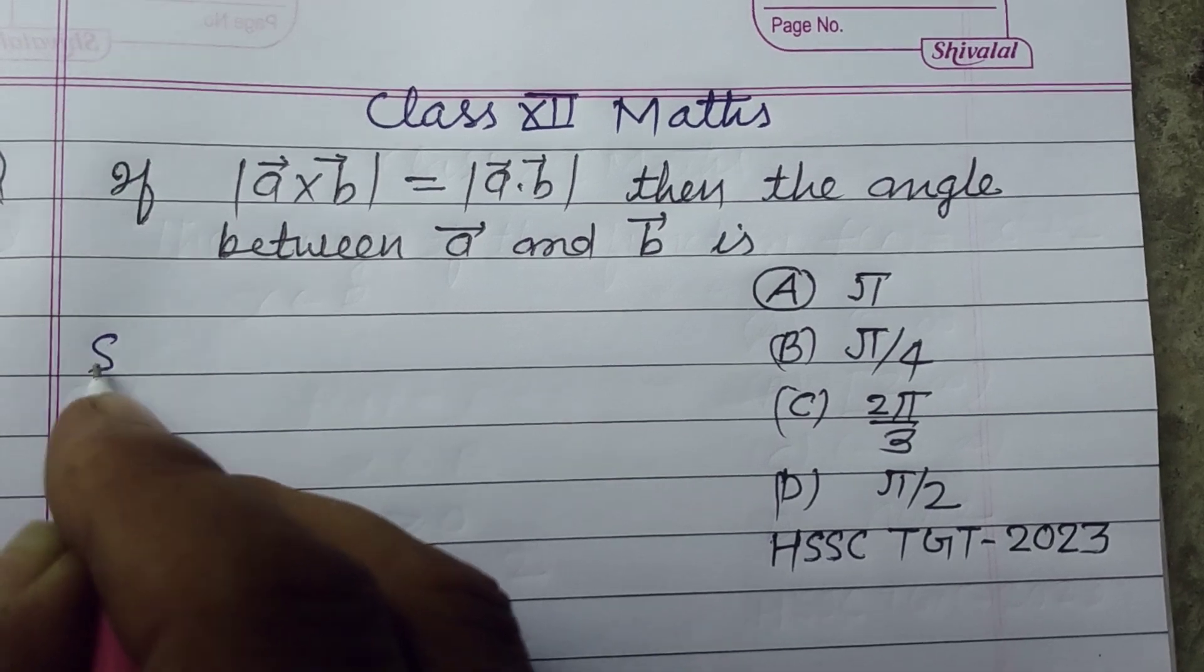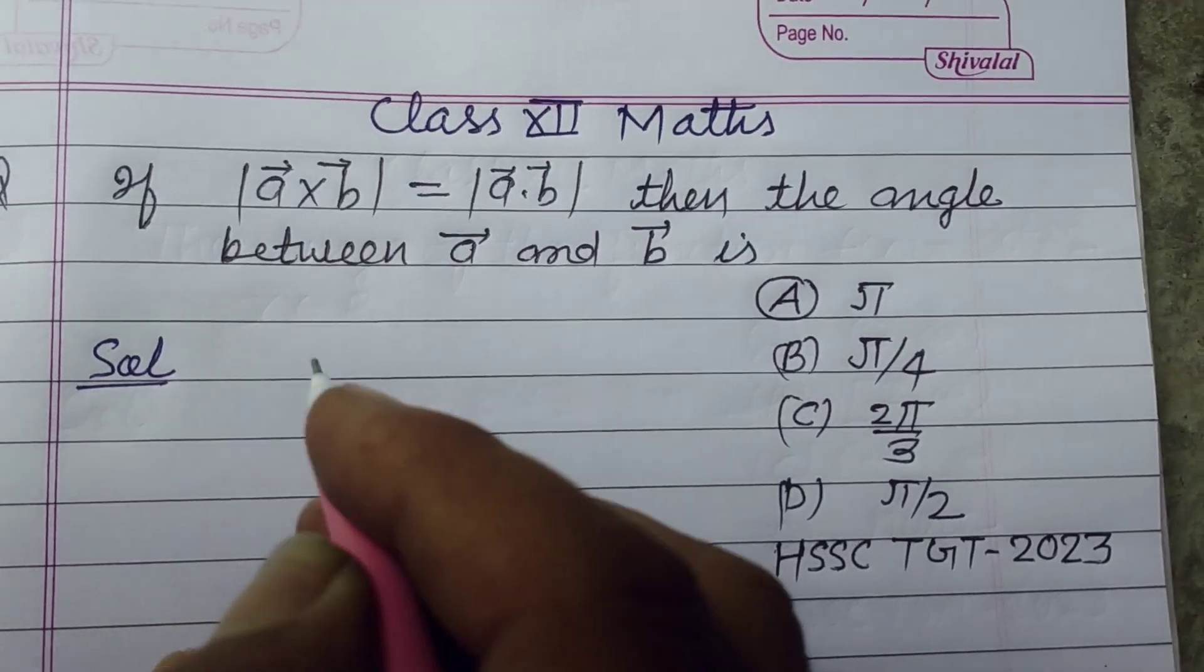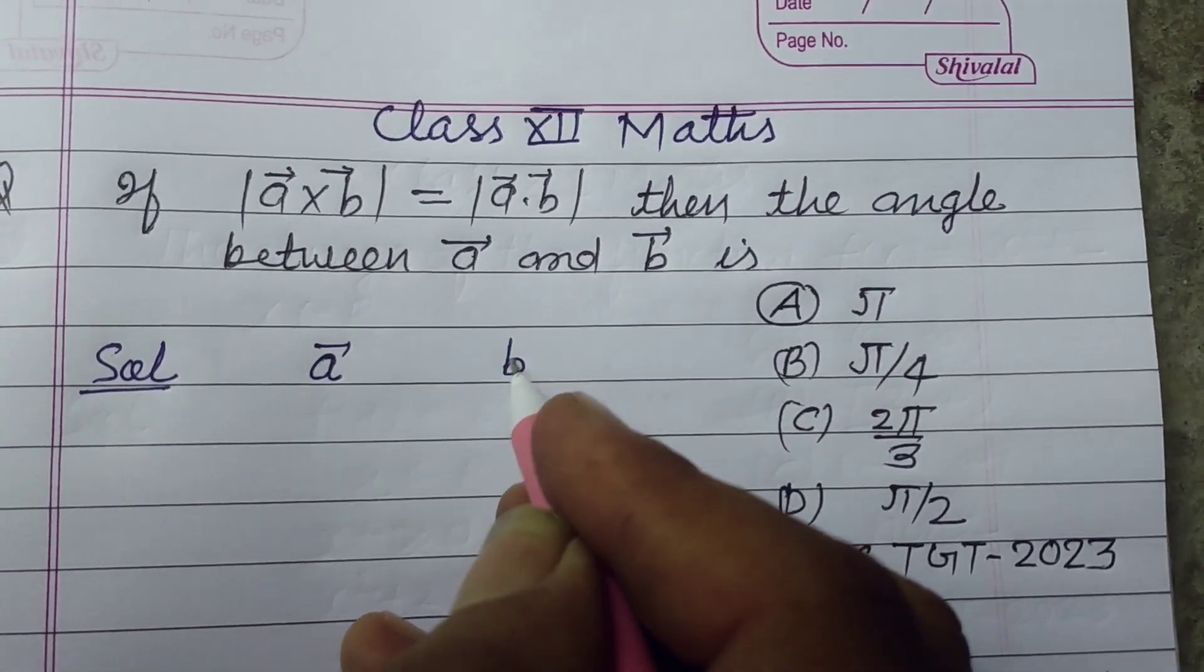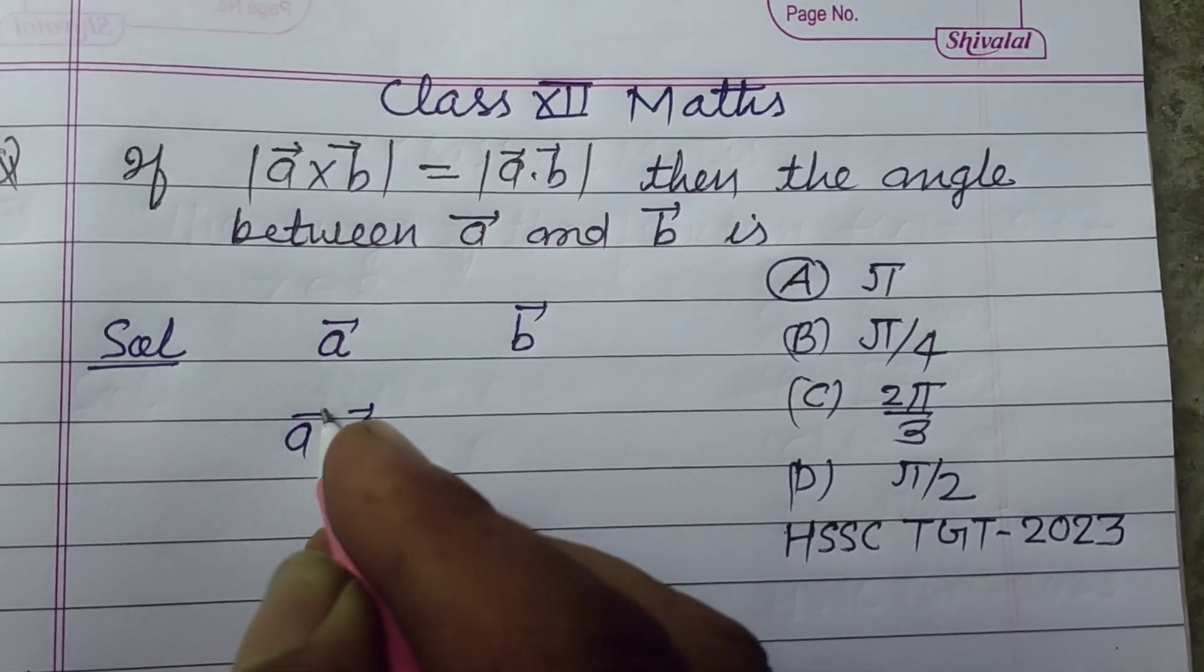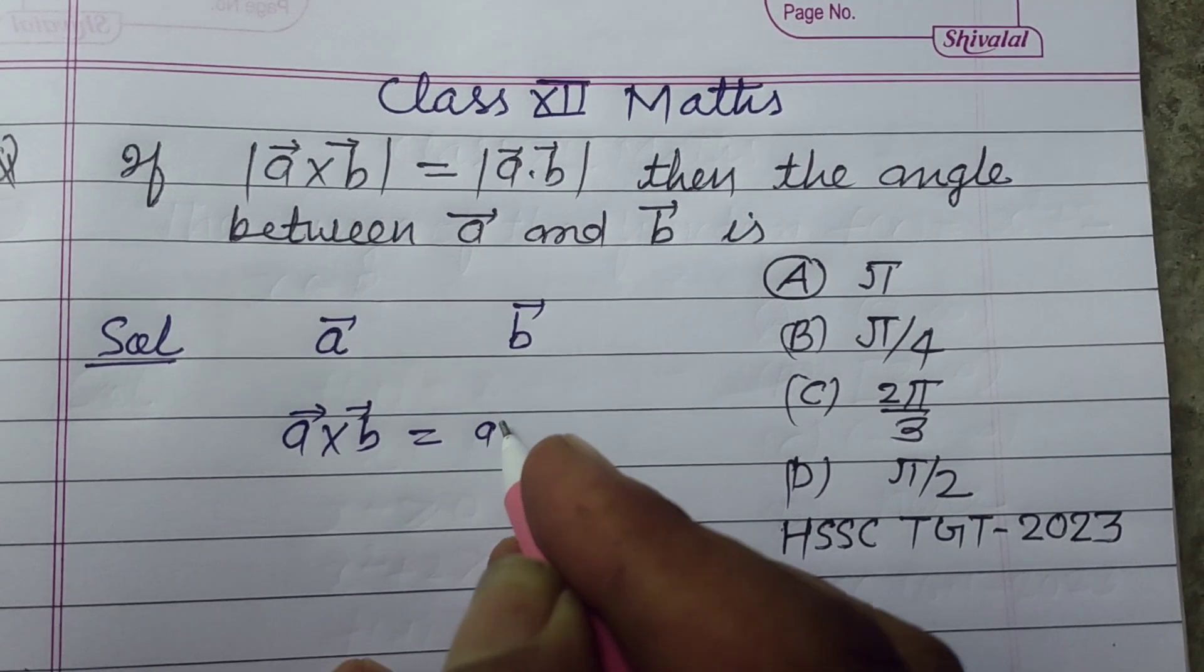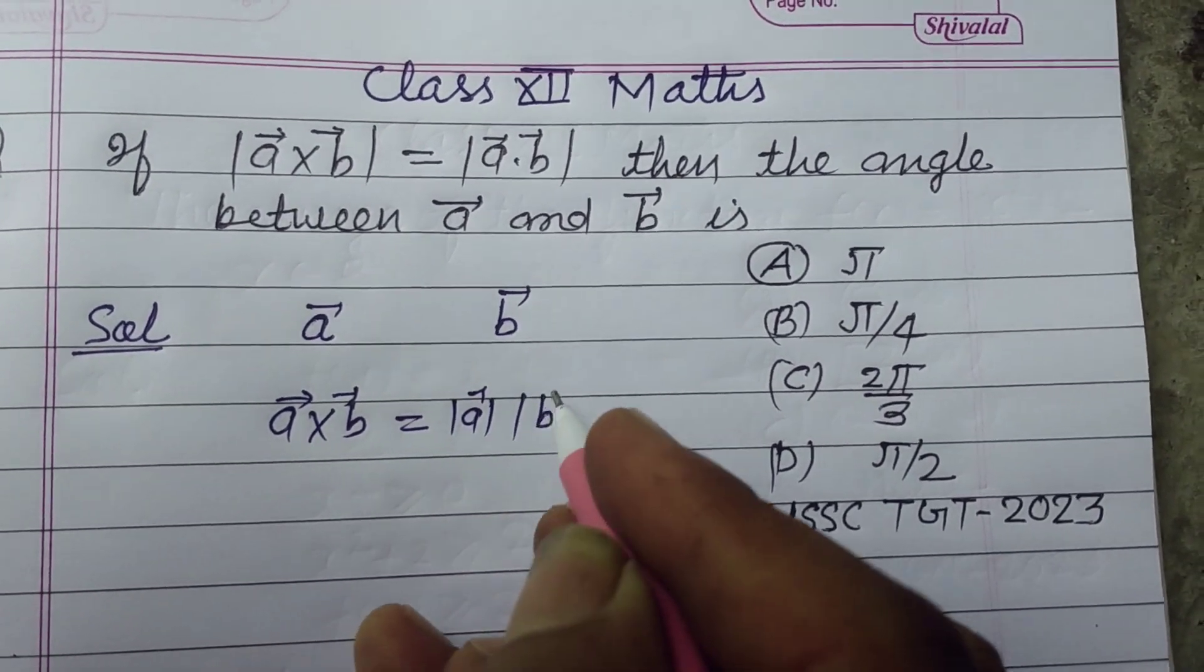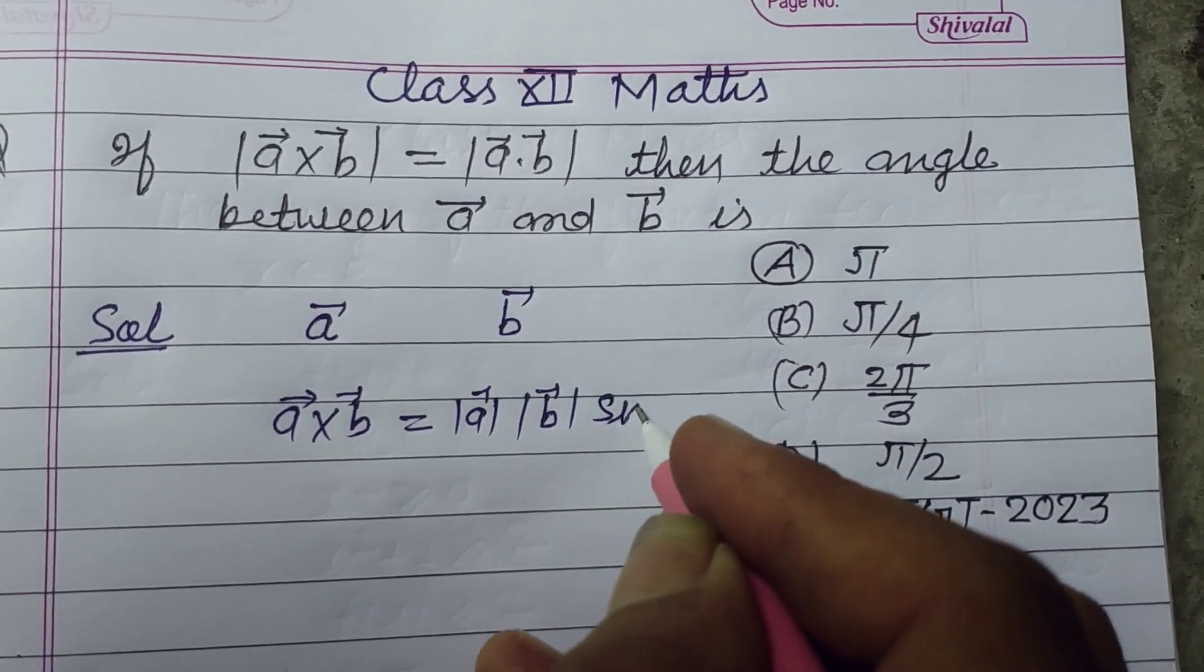So students, here two vectors are given, A and B. The cross product of two vectors A cross B is magnitude of A, magnitude of B, sin theta.